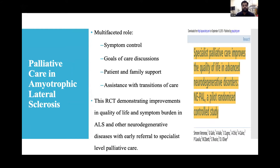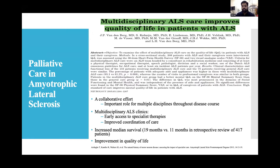Palliative care in ALS controls symptoms, discusses goals with patients and families, and assists with transitions of care. A 2015 BMJ article demonstrated that specialized palliative care improves quality of life in advanced neurodegenerative disorders — a pilot randomized controlled study showing improvement in quality of life and symptom burden in ALS with early referral to specialized palliative care. A 2013 study showed multidisciplinary ALS care improves quality of life through collaborative effort with multiple disciplines throughout the disease course.